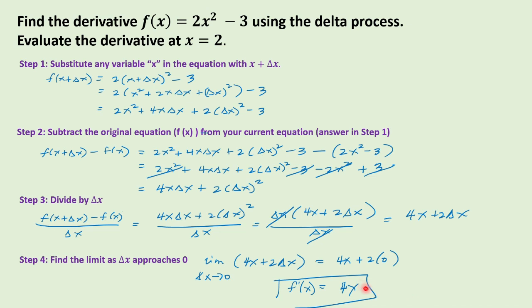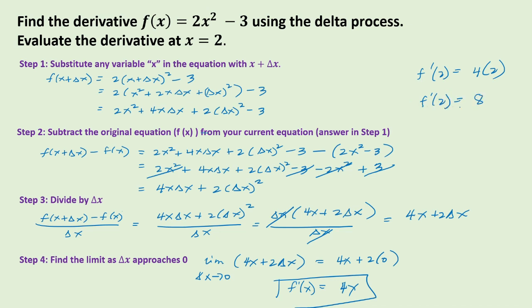To evaluate the derivative at x equals 2, we just need to substitute 2 into the derivative. So we have f prime of 2 is equal to 4 times 2. Therefore, the derivative at x is equal to 2 is 8.